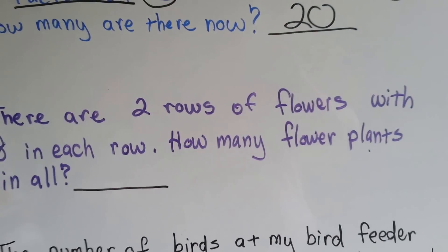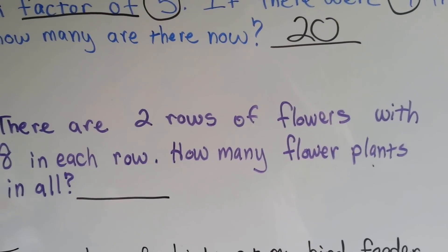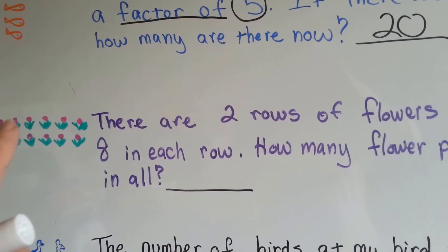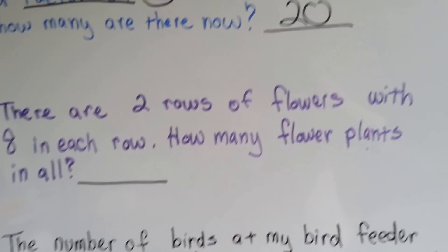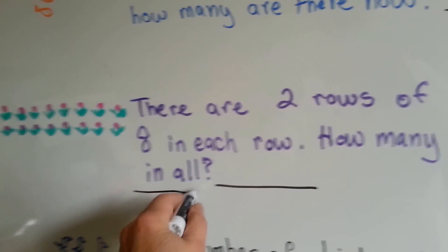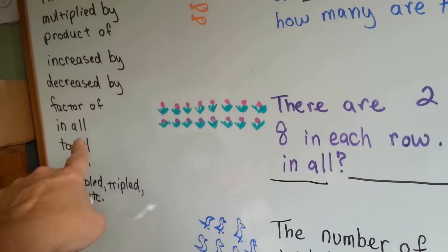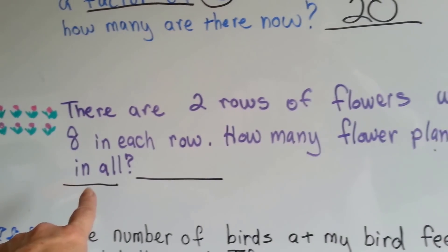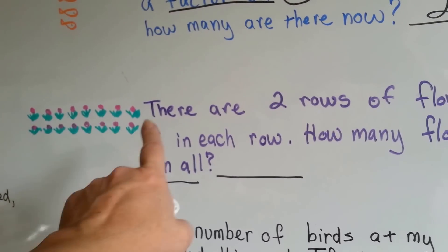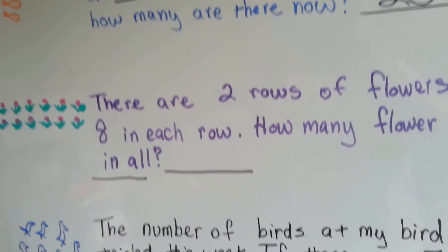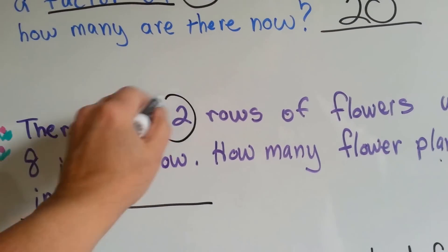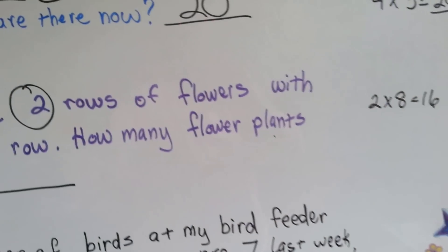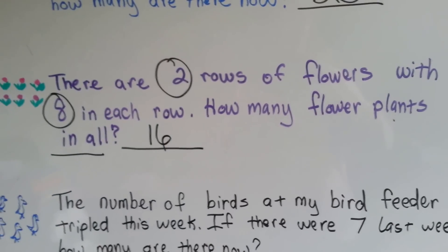There are two rows of flowers with eight in each row. How many flower plants in all? See 'in all'? That's our clue word. It could either be addition or multiplication. You could add these up, but it's much quicker to multiply. So two times eight is sixteen. There are sixteen flower plants in all.